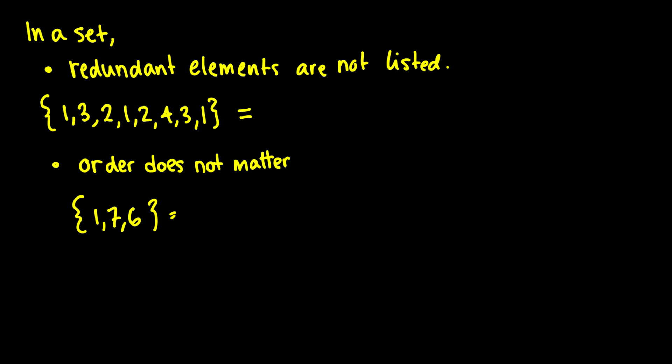So when we have a set, we don't include redundant elements. And what this means is that if we have a set with the same element twice, we really only want to list it once.